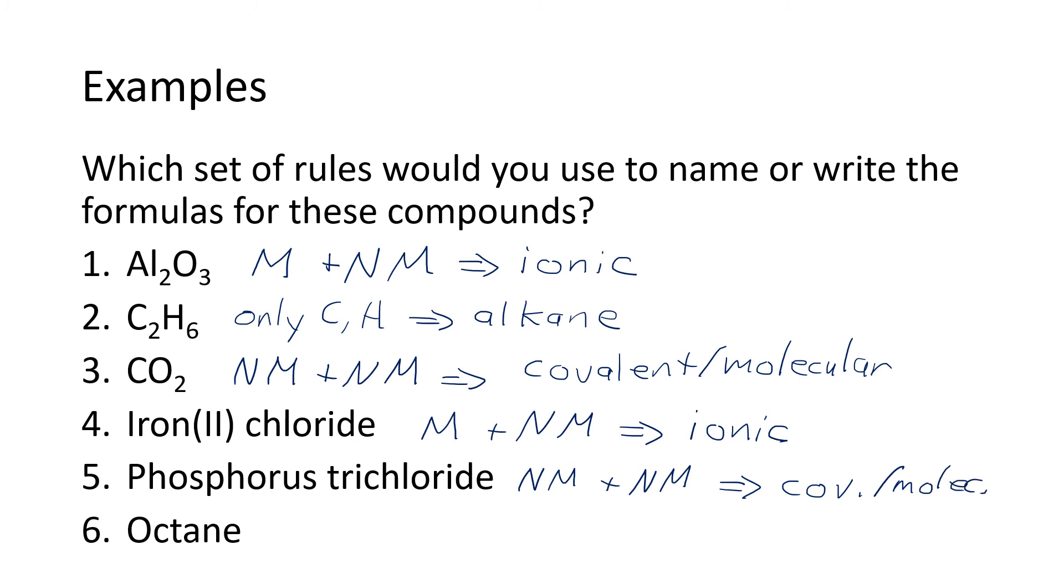And last but not least, we have octane. This time in giving you the name instead of giving you the formula, this may be a little bit trickier. Anytime the name ends with A-N-E, it's going to be an alkane. And you might notice oct at the start of that. The alkane names all start with some form of a numerical prefix that's going to tell us how many carbons there are in the molecule.